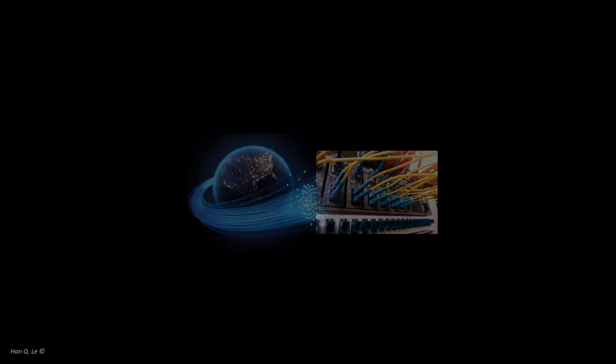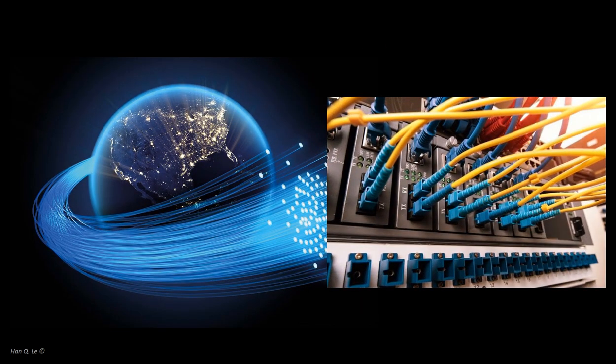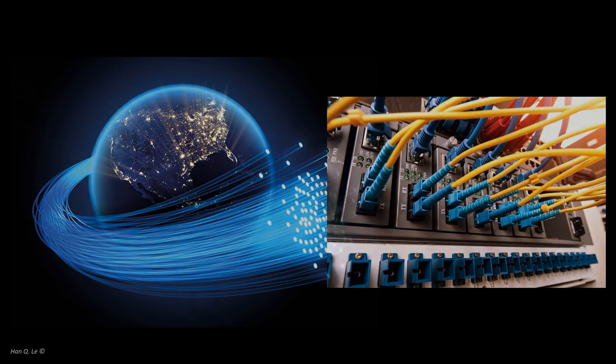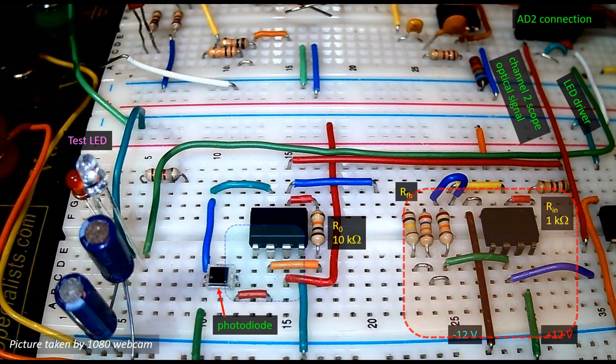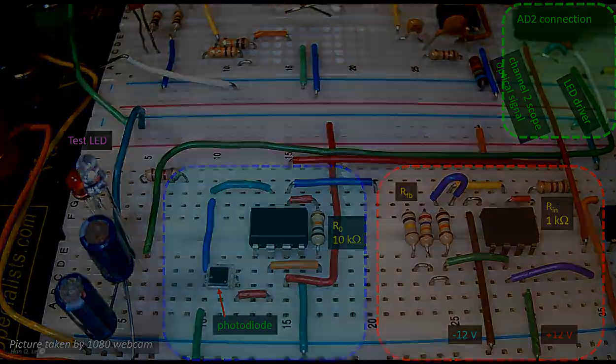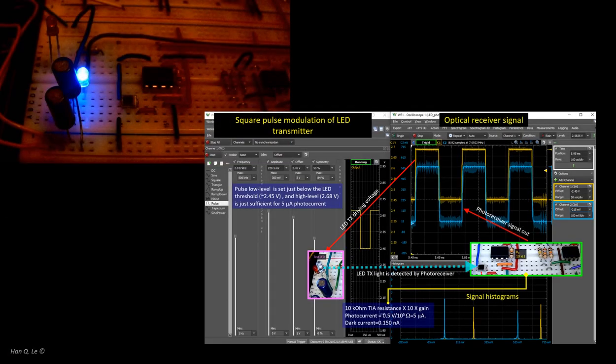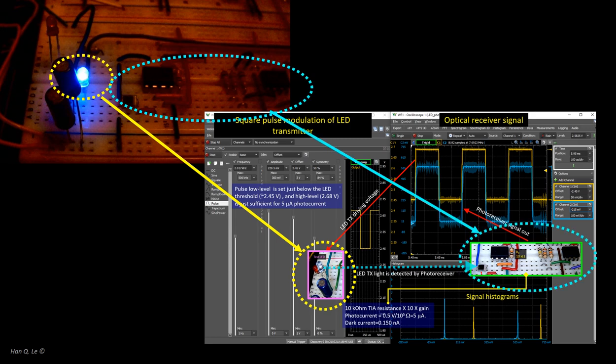For example, there is a photoreceiver at the final receiving end of every optical fiber spanning the global internet. The following are some examples of this circuit. A LED is used to test the photoreceiver. The AD2 output shows the voltage driving the LED with scope 1, the yellow trace. Light from the LED is received by the photodiode and the receiver gives the blue trace, scope 2.